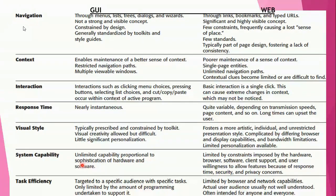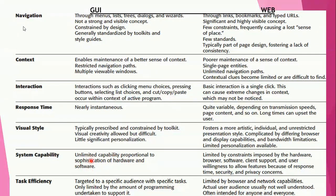Regarding system capability: in web interface it may be constrained and limited. Constraints are imposed by hardware, browser software, client support, and user willingness to allow features because of response time, security, and privacy concerns. In graphical user interface, unlimited capability is provided with sophisticated hardware and software — generally a single user with fewer security issues.